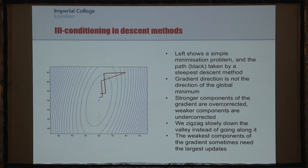As a result, we zigzag slowly down this valley, and this is very analogous to what Henry was saying in his previous talk about the balance between epsilon and velocity updates.